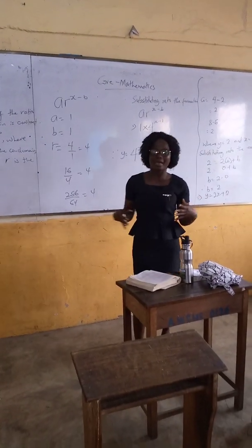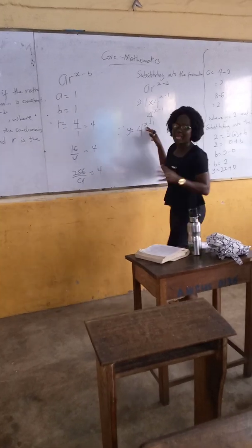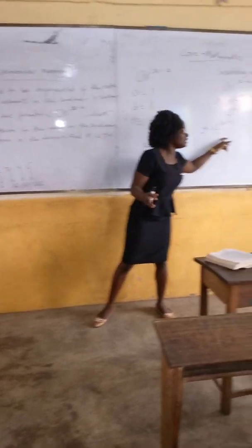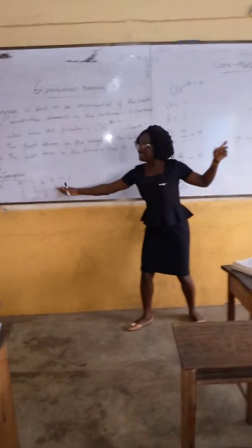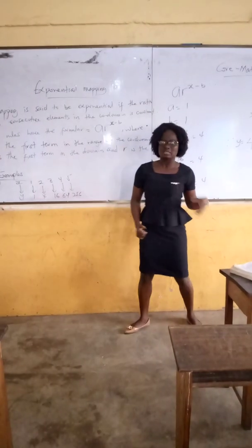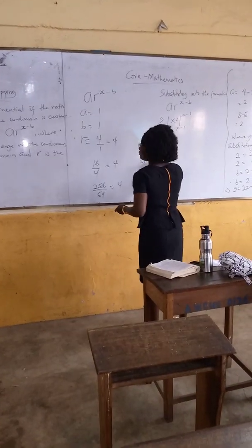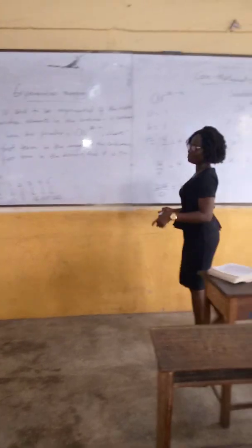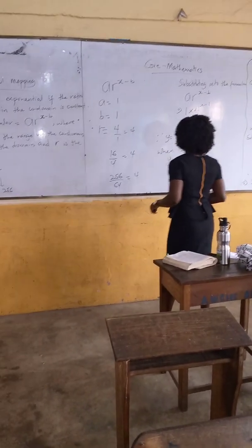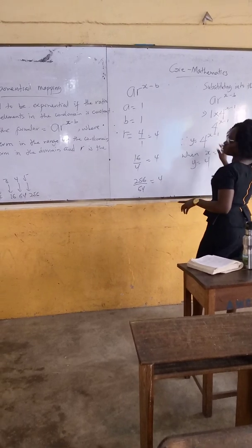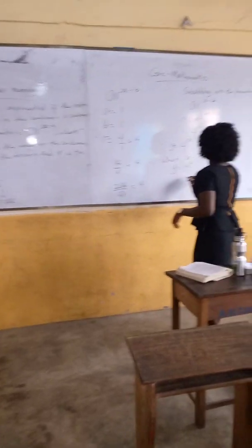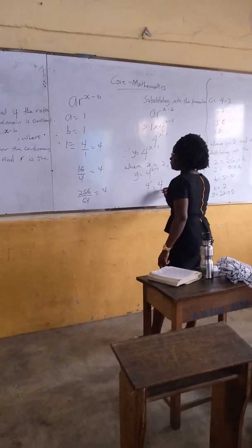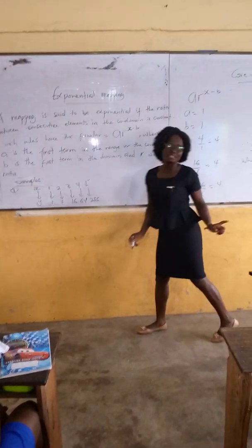Let's prove whether our rule is correct. We pick any of the x values and substitute into the rule. When x equals 2, we expect to get the corresponding y value of 4. So y = 4^(2-1) = 4^1 = 4. We got 4 — our rule is correct.